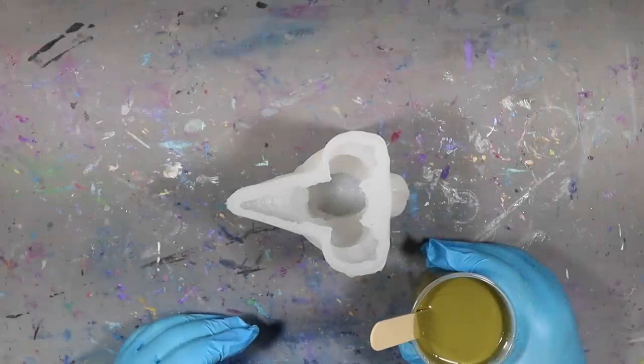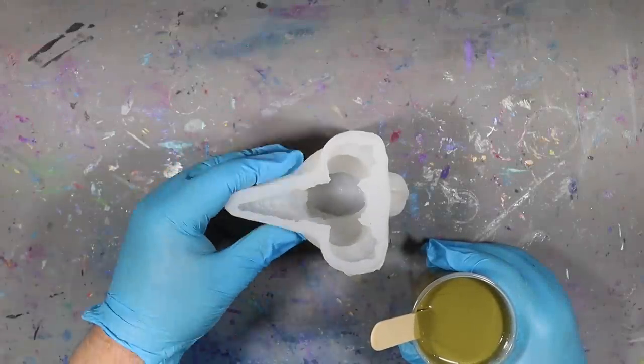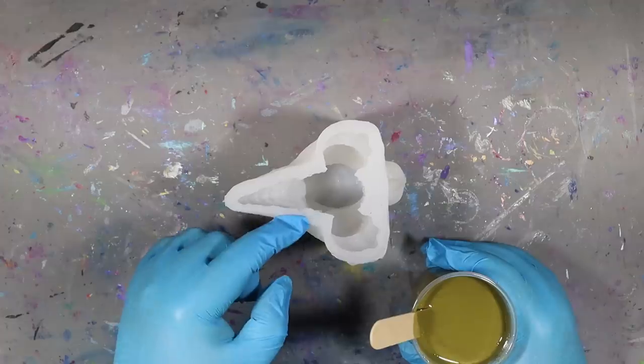The resin is now starting to get thick, so what I need to do is pour it into the mold and then move it all around to try and coat all the edges.